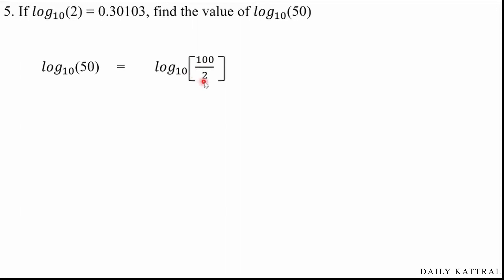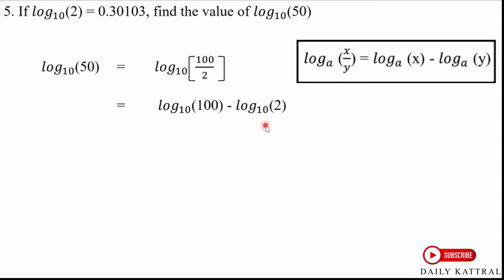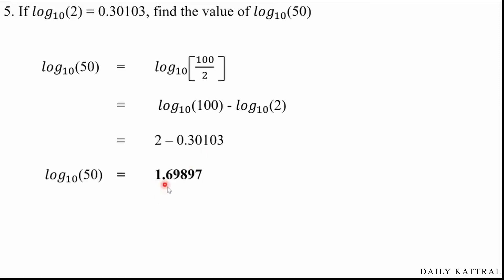Log base 10 of (100/2) equals log base 10 of 100 minus log base 10 of 2. We know log base 10 of 100 equals 2, and log base 10 of 2 equals 0.30103. Therefore, log base 10 of 50 equals 2 minus 0.30103, which equals 1.69897.